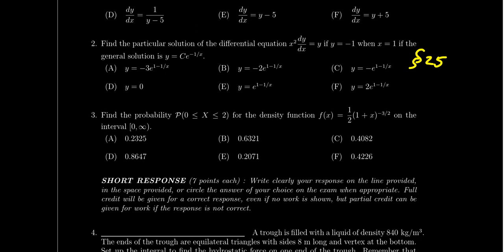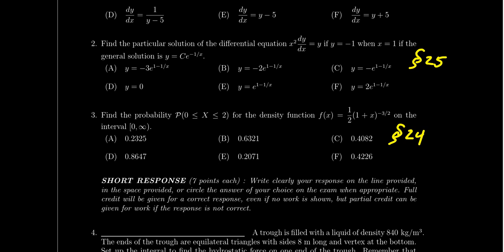The third and final multiple choice question involves a calculation about probability, which we discussed in Lesson 24. You'll be given a probability density function and asked to compute the probability of an event — that comes down to an integral calculation. Be aware this question could also ask you to compute the expected value of a random variable. The integrals could also be improper, going off toward infinity. The answer will be written as a decimal, so a calculator may be very helpful on question 3.